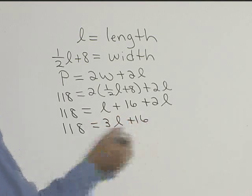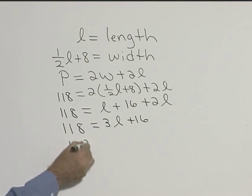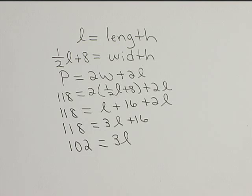If we subtract 16 from both sides, this will be 102 is equal to 3L. Now we don't want 3L, we want L. So if you divide both sides by 3, you get L is equal to 34.